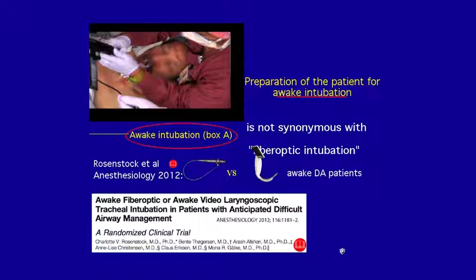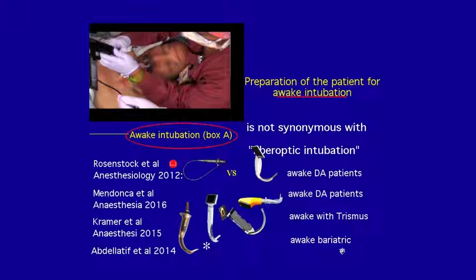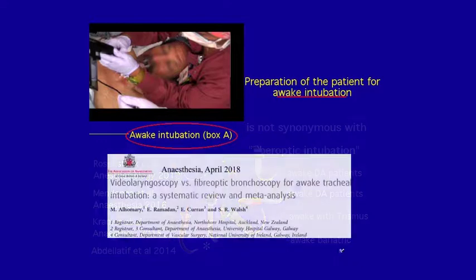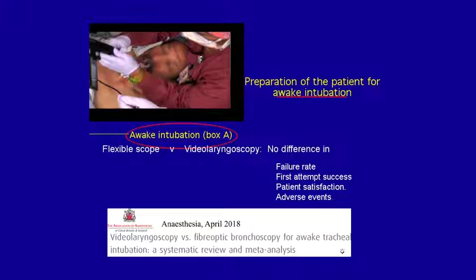There's good literature on this. A 2012 study compared a flexible scope with a McGrath laryngoscope. Studies using the Pentax airway scope, the C-Mac, the Glidescope, and King Vision in various clinical situations showed that success rates and time to intubation were the same. A meta-analysis looking at flexible scope versus video laryngoscope found failure rate, first attempt success, patient satisfaction, and adverse events were all the same. You don't have to wait for your flexible scope, or if you're not comfortable with it, you can use a video laryngoscope.